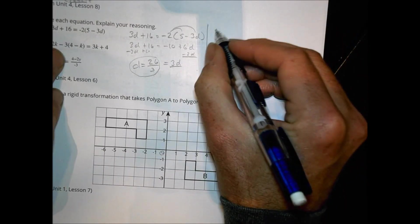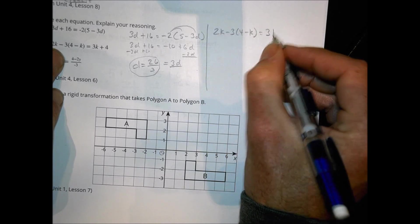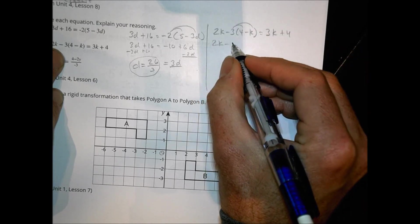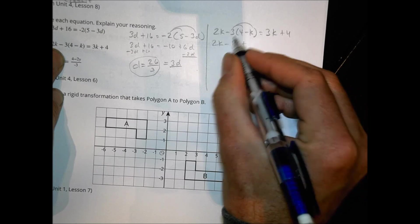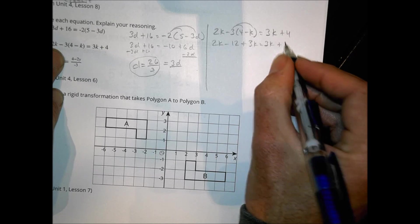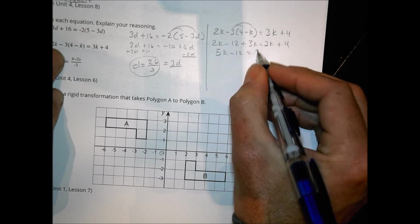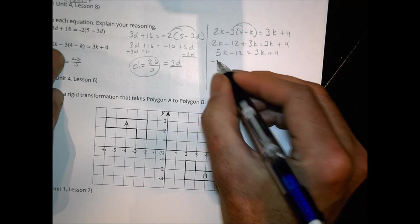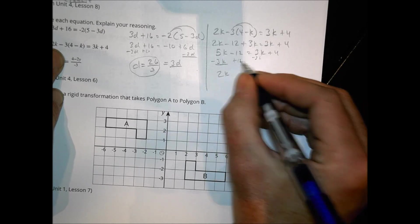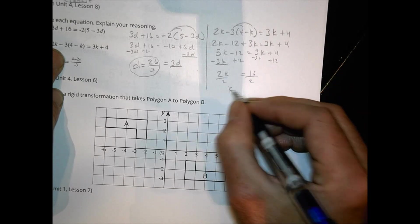For b, we're going to do 2k minus 3 times 4 minus k equals 3k plus 4. We're going to distribute. So 2k minus 12 plus, be careful there, negative and negative plus 3k equals 3k plus 4. So 2 and 3 is 5k minus 12 equals 3k plus 4. So we're going to subtract 3k here. Then I put a 2k. We're going to add 12k here to end up with a 16. We're going to divide by 2. And k is equal to 8.